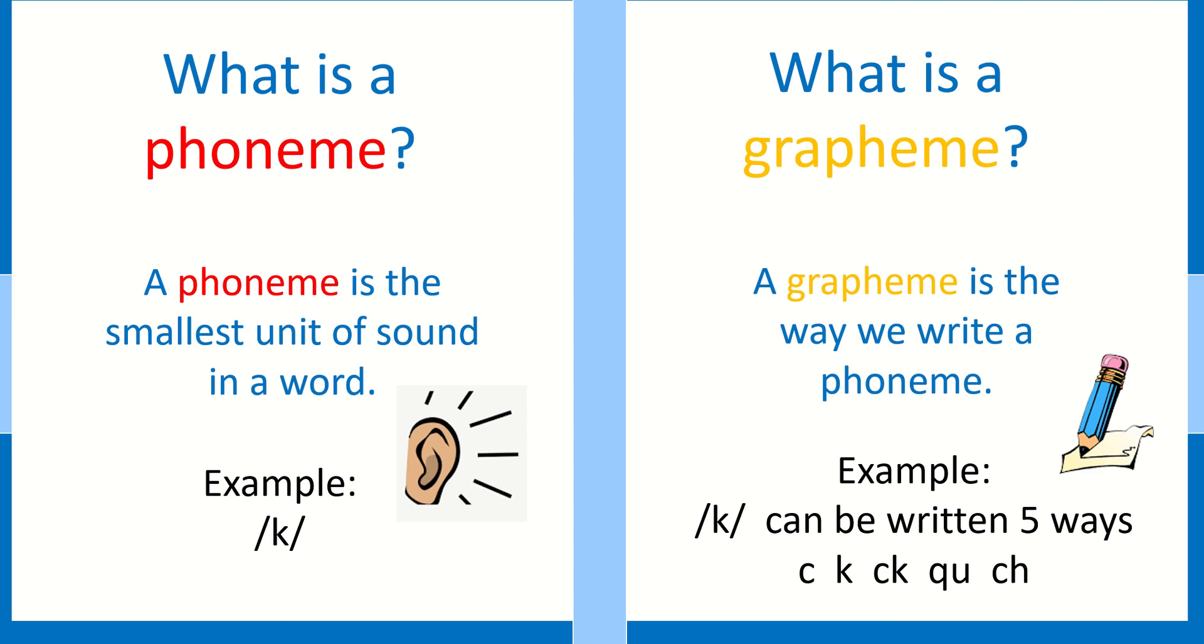So what is a grapheme? A grapheme is the way we write a phoneme, and a phoneme is the smallest unit of sound in a word. For example, k is a phoneme. The phoneme k can be written in five different ways: c, k, ck, qu, or ch. Each of those five different letters or letter combinations are all graphemes.